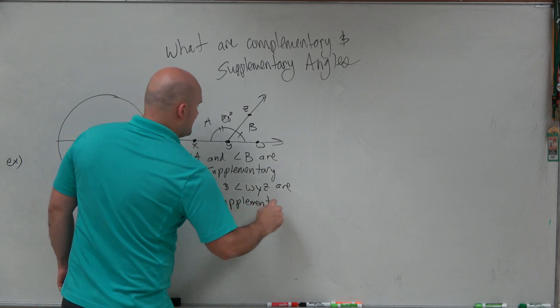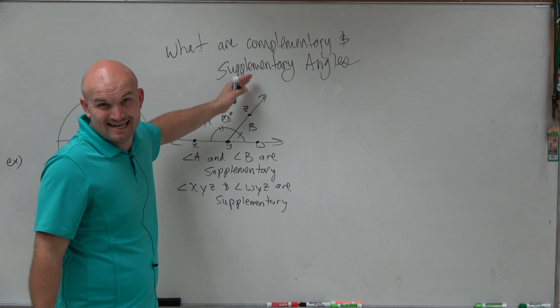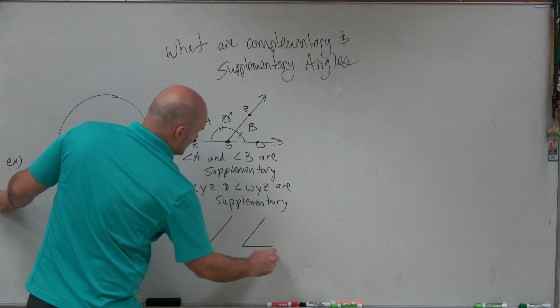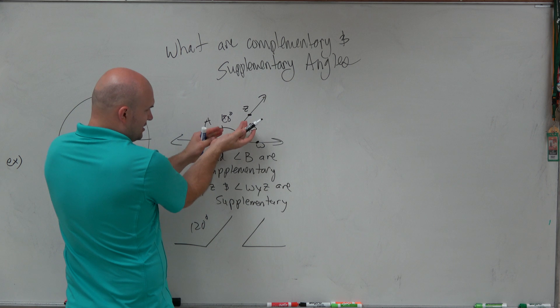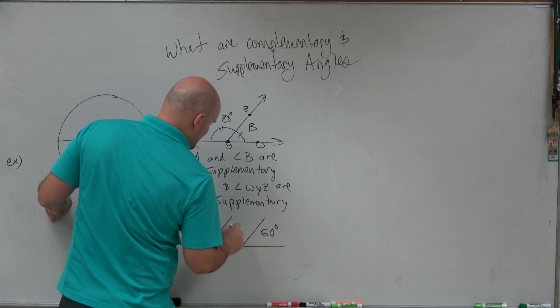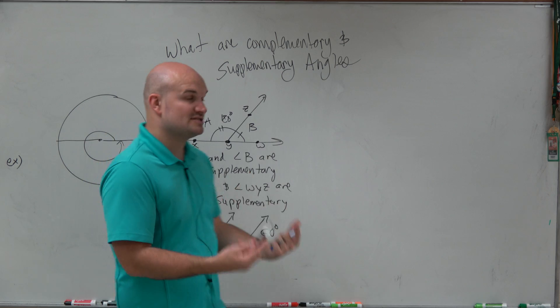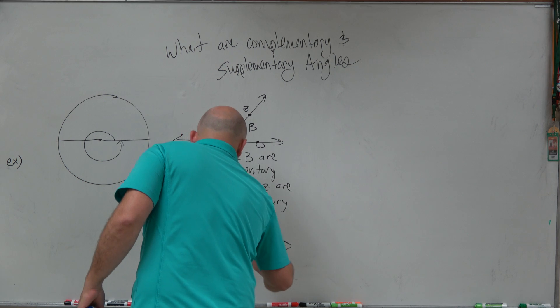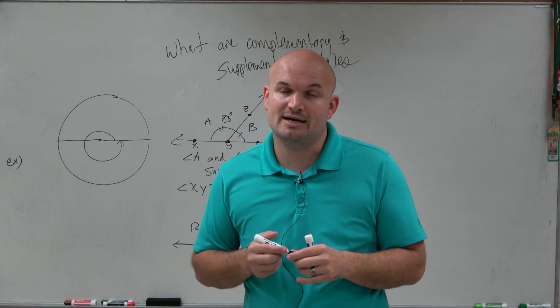Now, the other thing to recognize about supplementary angles is they don't have to share an angle. They don't have to be what we call adjacent angles. They could literally just be the exact same angles but separated from one another. As long as we know their sum of their measure adds up to 180, I could also say these two angles, let's call these angles C and D, are also supplementary because the sum of them is equal to 180 degrees.